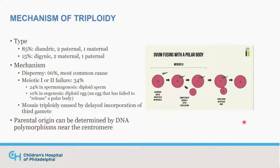Looking at triploidy: most triploidies are two paternal and one maternal, about 85%, and most of the time this is caused by two sperm, or dispermy. However, meiosis 1 or 2 failure can also result in triploidy. Mosaic triploidy is actually caused by a delayed incorporation of a third gamete — it starts with two gametes fusing and dividing, and then the third gamete fusing to one of those daughter cells. We can look at the centromeres to determine the parental origin.